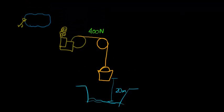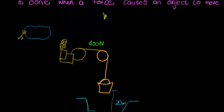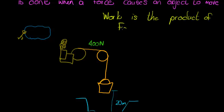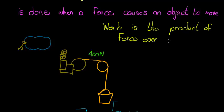Now, work defined is work is the product, product means multiply, the product of force over distance. So we said it causes the object to move. So, obviously, if the object is moving, it is displacing some distance. So that force multiplied by that distance, work is equal to force times distance.